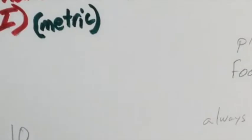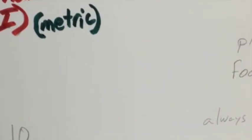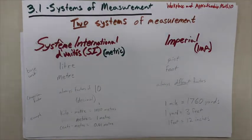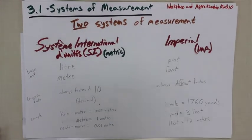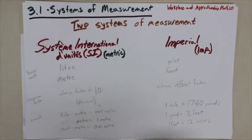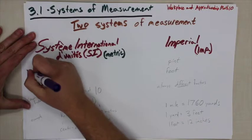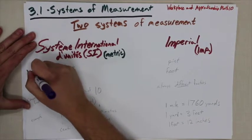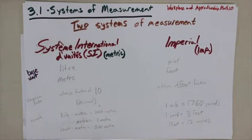The other system of measurement is called the imperial system. The important thing about the two systems is that they have different base units. The base unit is the one unit that all other measurements are based on — they're either one part of that unit or multiples of that unit.